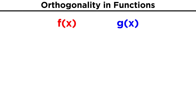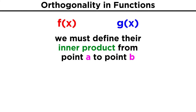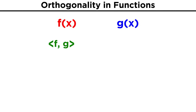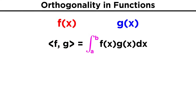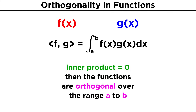Lastly, we can even consider orthogonality between functions. To do this, we must consider a definition for something called the inner product from point a to point b for the functions f(x) and g(x). This inner product, written as ⟨f, g⟩, is defined to be the integral from a to b of f(x) times g(x) dx. Once again, if this inner product ends up being equal to zero, the functions are said to be orthogonal.